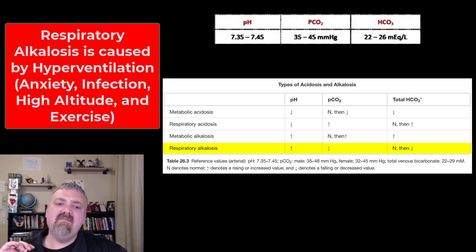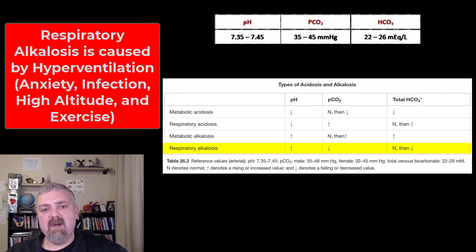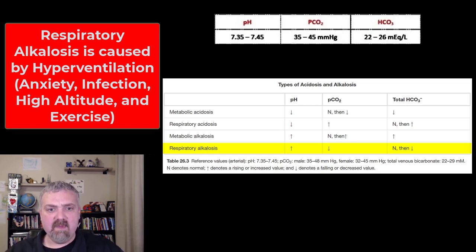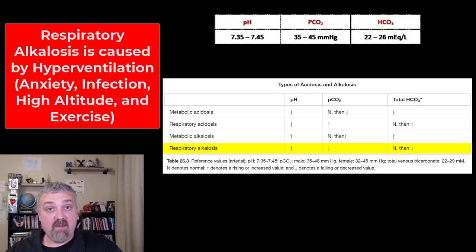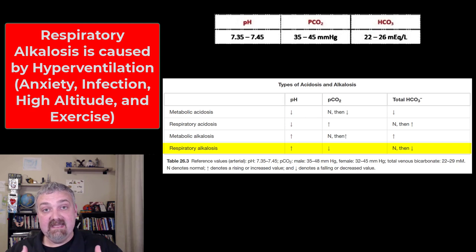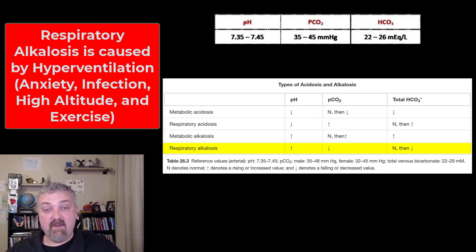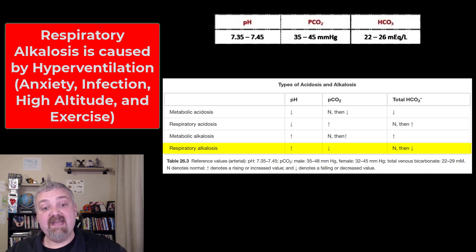Lastly, we have respiratory alkalosis, which is primarily caused by hyperventilation. This is usually not a big emergency — if someone's hyperventilating, calm them down and have them breathe into a bag, because their carbon dioxide levels are too low. If they breathe into a bag, they'll suck that CO2 back in. As the CO2 levels climb back up, or they calm down and stop breathing so fast, their pH should return to normal and they should be fine.